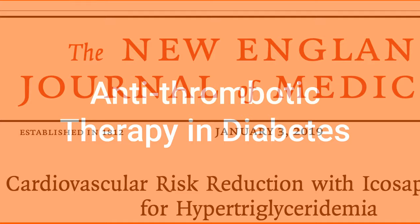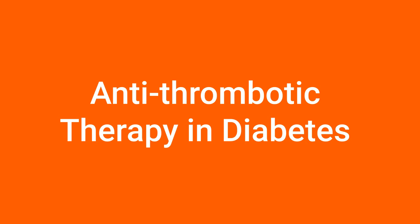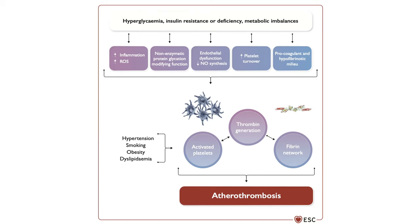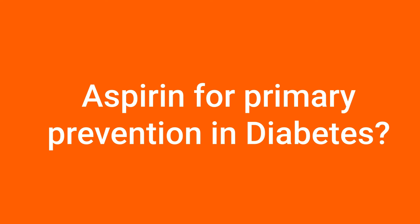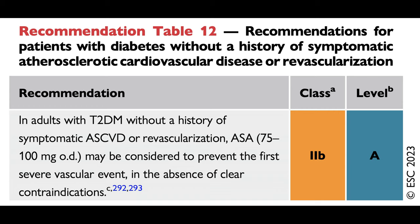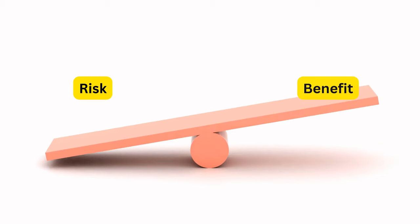Patients with diabetes are more likely to develop thrombosis due to several mechanisms including endothelial dysfunction, reactive oxygen species, inflammation, and glycation end products. For primary prevention, aspirin 75 to 100 mg may be considered in diabetes with no history of symptomatic disease or revascularization. Aspirin can prevent the first severe vascular event, but the benefit is small and comes at a cost of increased bleeding, making it a class 2b recommendation. The benefit from aspirin increases as cardiovascular risk increases, so the decision should be individualized.